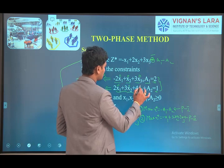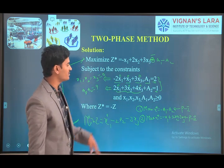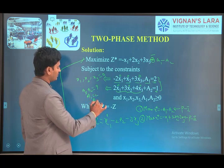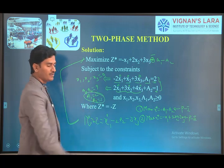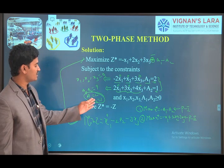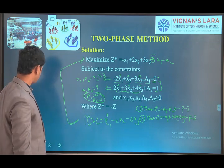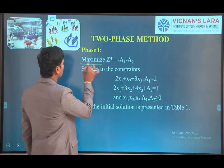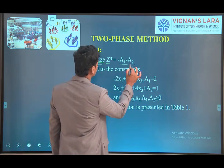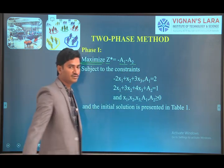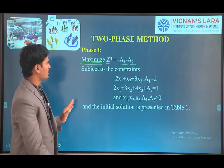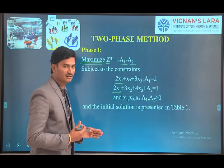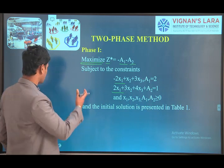Substituting the non-basic variable values into the linear equations, we get a1 = 2 and a2 = 1. This is our initial basic feasible solution. Coming to phase 1, we have the objective function: maximize z = −a1 − a2, and we take the same constraints as converted.